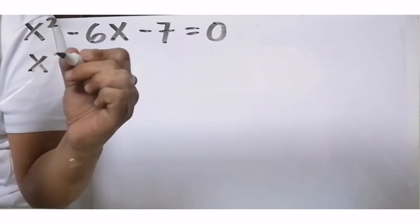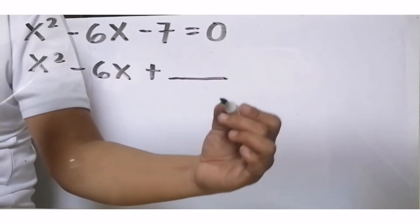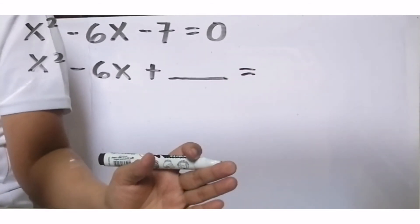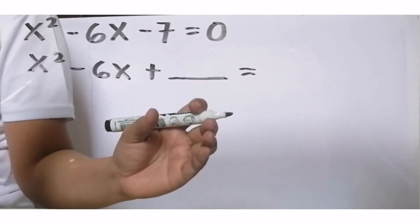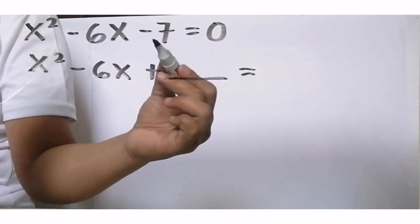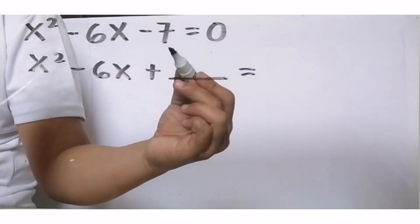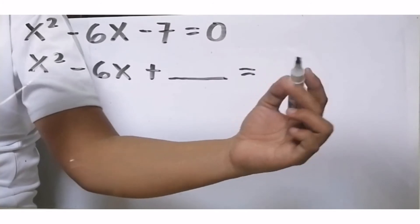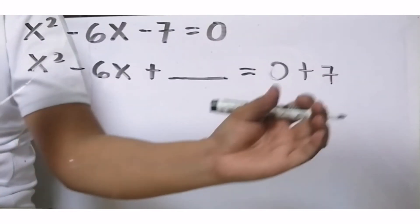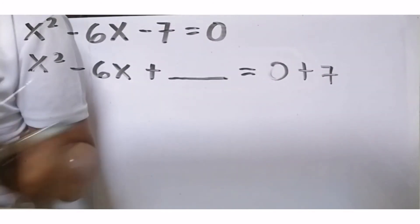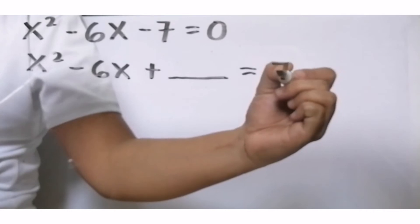Rewrite as x squared minus 6x plus blank equals... Negative 7, let's use a shortcut. By additive inverse, this becomes 0. The inverse of negative 7 is positive 7. Take note, whatever we add here, we also add to the other side. When this becomes 0, we added positive 7, so add positive 7 to the other side also. It's like 0 plus 7. What is 0 plus 7? Of course, just 7. So we write positive 7.